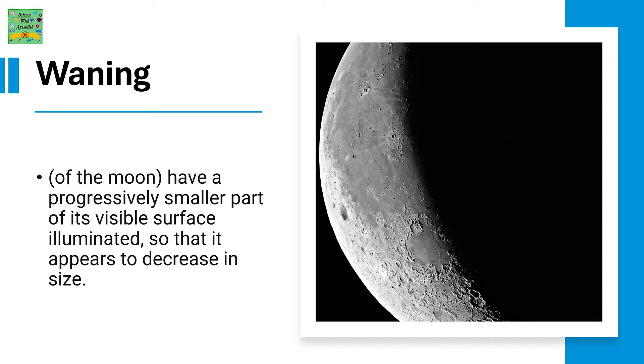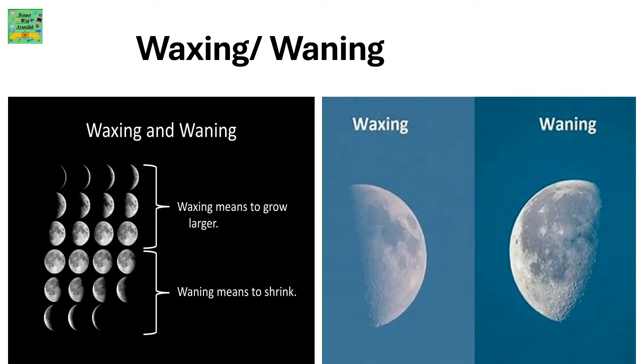Waning: Of the Moon, have a progressively smaller part of its visible surface illuminated so that it appears to decrease in size. These are the shapes of waxing and waning. Waxing means to grow larger and waning means to shrink.